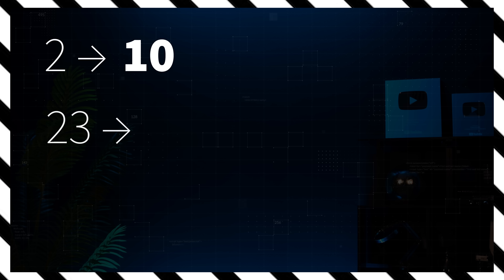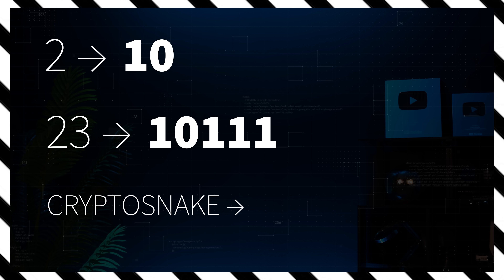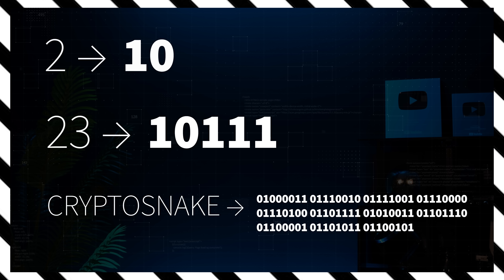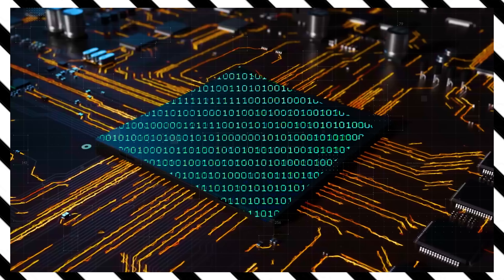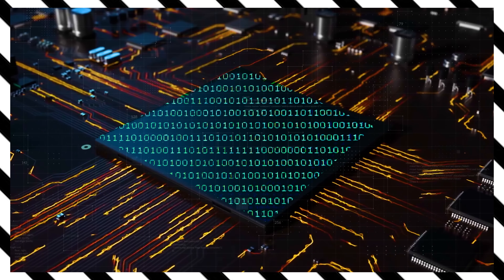Let's begin with what we know: classical computers. They use bits. A bit is either a 0 or a 1 — think of it like a light switch. Off is 0, on is 1. For example, in binary the number 2 is written as 10, and the number 23 is 10111. The word 'crypto snake' in binary using ASCII encoding looks like this. So every photo, song, or app on your phone is built from billions of 1s and 0s.